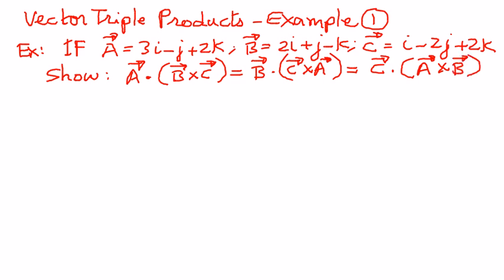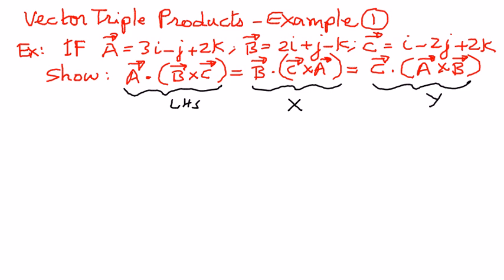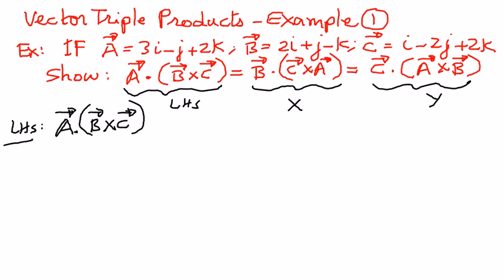To get started, we will call this the left hand side of the equation. We will first solve the left hand side, which is vector A dot B cross C. We're going to first perform the cross product, and then perform the dot product. One of the properties of triple products tells us that when we have vector A dot B cross C, we can use determinants to find the value of this.